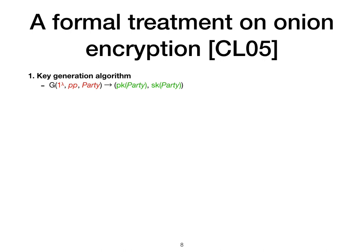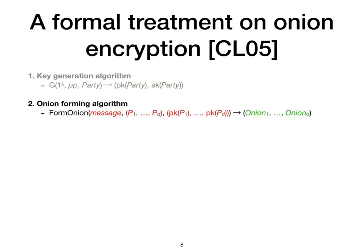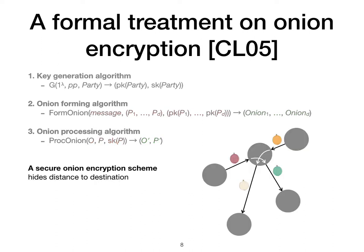Kavanish and Lisianskaya formalized the notion of onion encryption by defining an onion encryption scheme as a triple of algorithms: a key generation algorithm G, an onion forming algorithm FormOnion, and an onion processing algorithm ProcOnion. They also provided the first formal security definitions for onion encryption. Onions generated using a secure onion encryption scheme mixed properly, regardless of how far they are from their destinations.